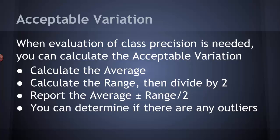Let's do an example of this. We can use acceptable variation to determine if there are any outliers, any people in the class, any groups in the class that were really way off. It's called an outlier.